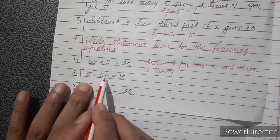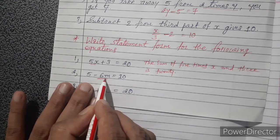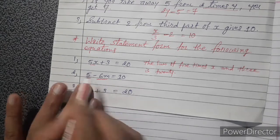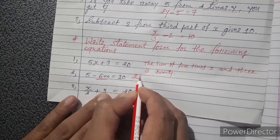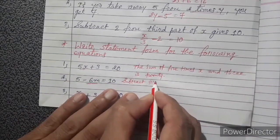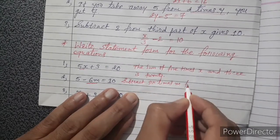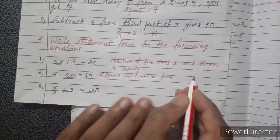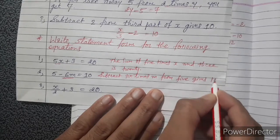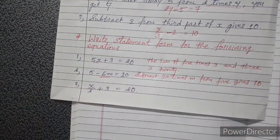Next equation: 5 minus 6m equals 10. Here we subtract 6m from 5, so the statement is: subtract 6 times m from 5 gives 10.